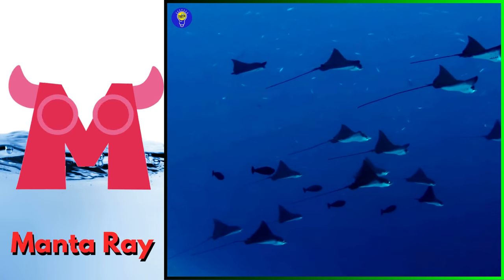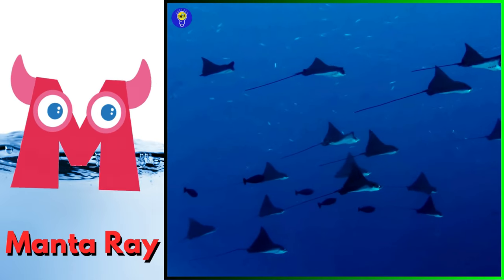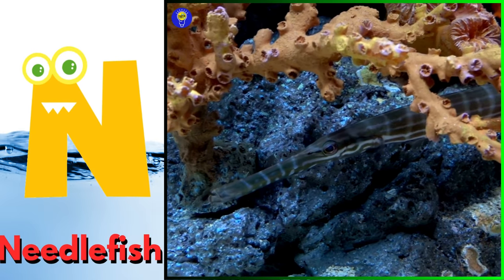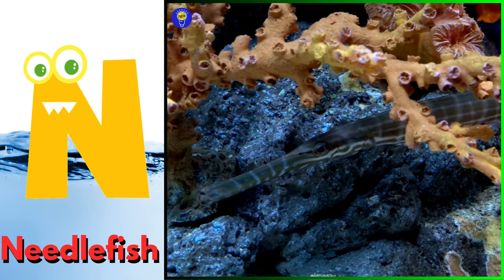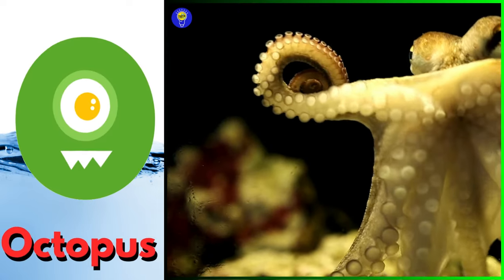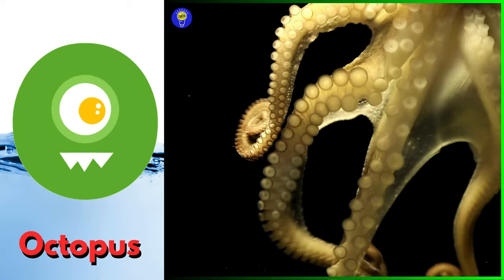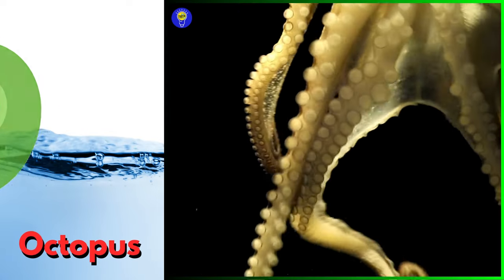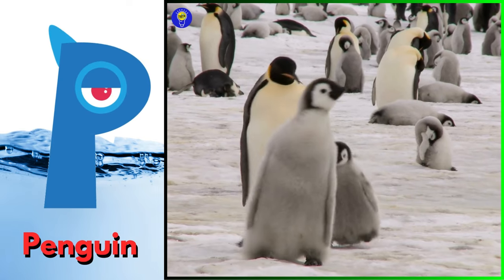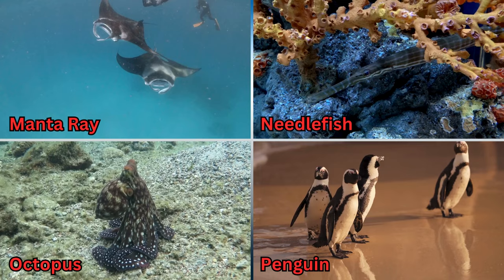M is for manta ray, muh muh, manta ray. N is for needlefish, nuh nuh, needlefish. O is for octopus, o o, octopus. P is for penguin, puh puh, penguin.